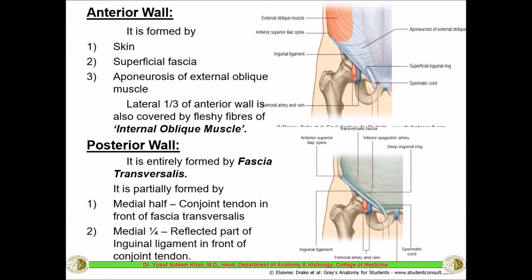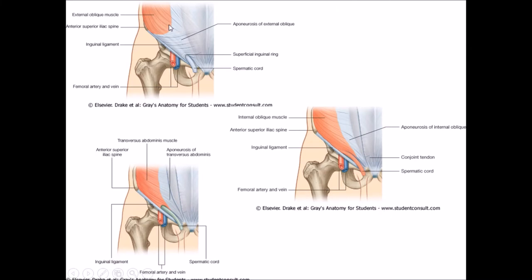There is also the reflected part of the inguinal ligament — the inguinal ligament is the aponeurosis of the external oblique which twists and turns deep inside, converting itself into a canal. A part of it is also reflected, called the reflected part of the inguinal ligament, which partly forms the posterior wall in the medial one-fourth. The inguinal ligament extends from the anterior superior iliac spine to the pubic tubercle. It is not a true ligament but part of the muscle aponeurosis; it is called a ligament because it lies between two bones.